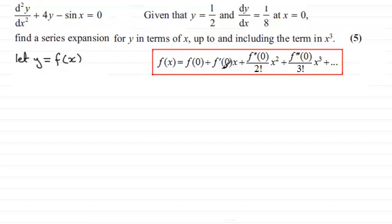As for this second term, f'(0), that's essentially the first differential of f(x) with respect to x. When x is 0, we've got that result. It's here. When x is 0, we know that dy/dx = 1/8.